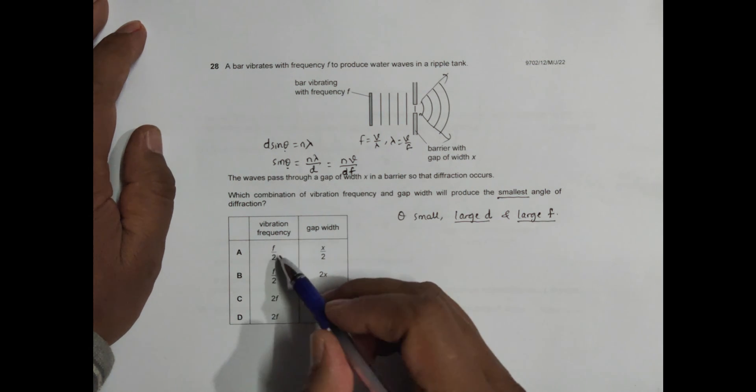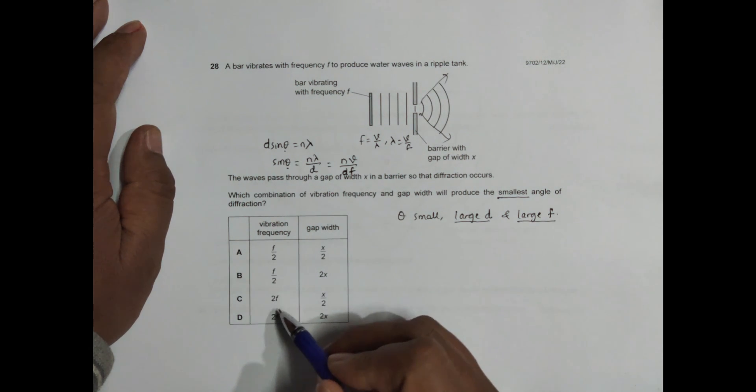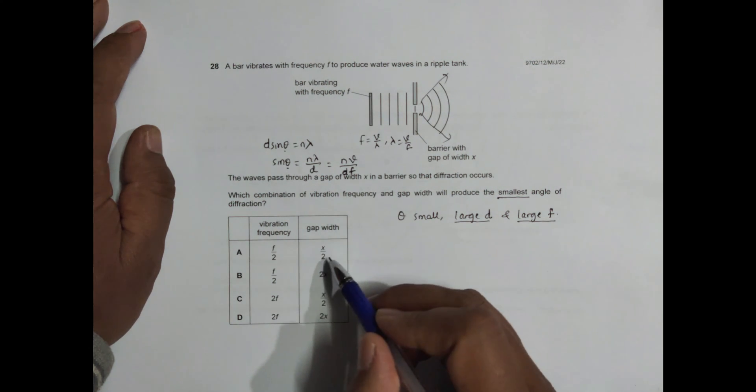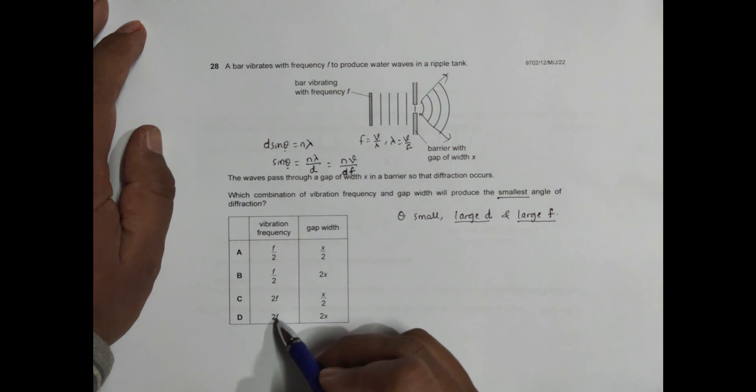So let's look here. We have f by 2 and twice f. Twice f is large, so the choice should be somewhere here. We have x by 2 and twice x. Twice x is large. So twice f is largest and twice x is largest.